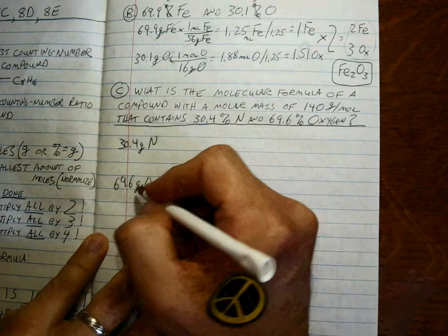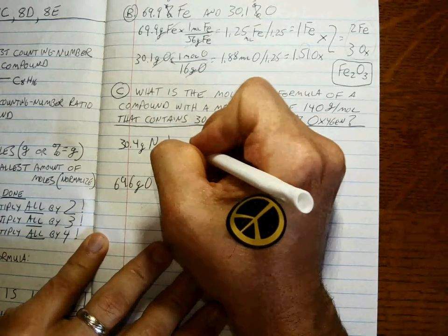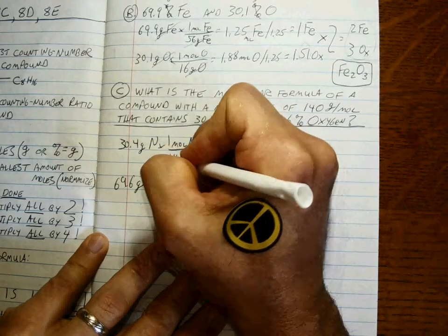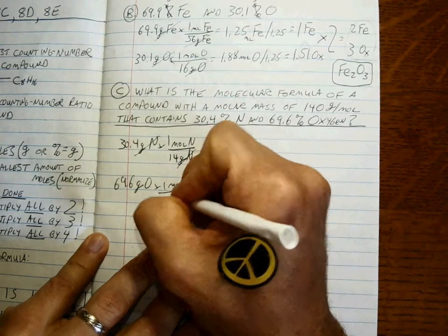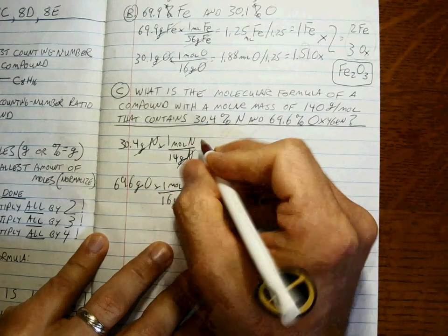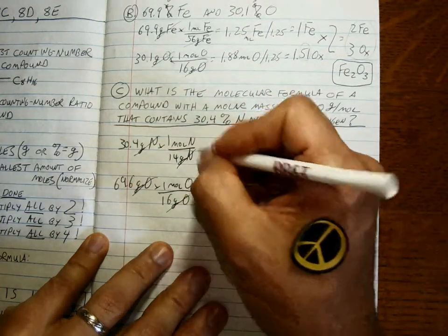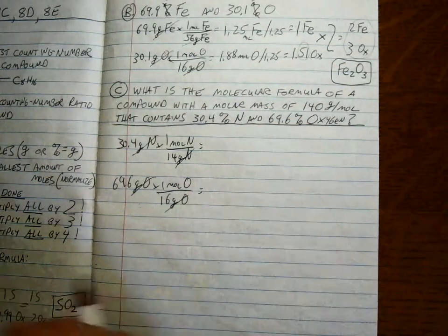We've already changed the percentage signs to grams. Now we're going to convert to moles using the periodic table and the molar masses. Hopefully you've done enough problems that you don't even have to look for nitrogen. You know it's right around 14 and oxygen's right around 16. So let's see what those ratios are.